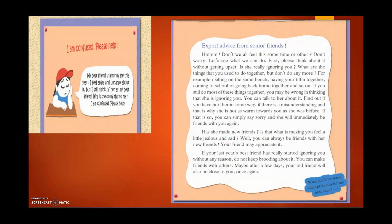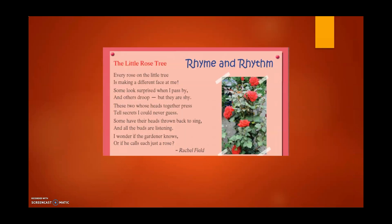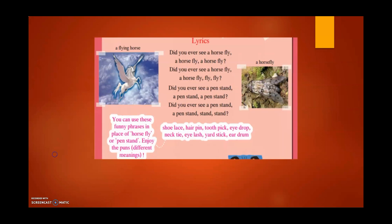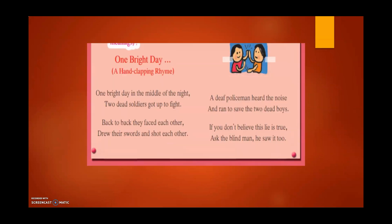The next column is I Need Help, where a person is confused and asking for advice. Here, a best friend is ignoring someone, making them feel unhappy and angry, and on the next side there is advice given by another friend. The next column is also fun — it is about poems, rhymes and rhythms. The first poem is The Little Rose Tree, and the second is a fun poem playing with words and making puns. There is also an action song where you can read the song and do some actions.